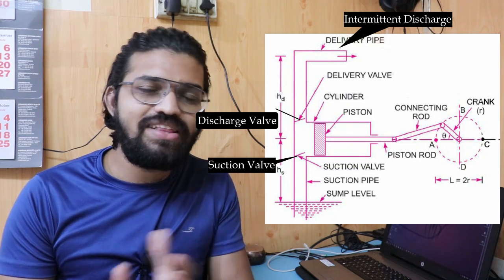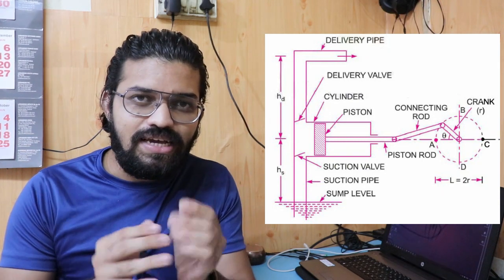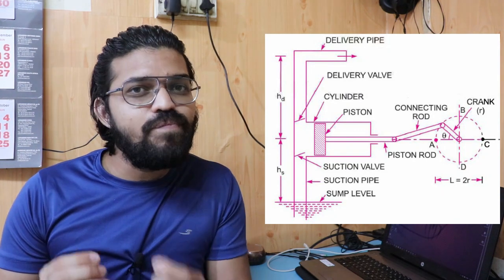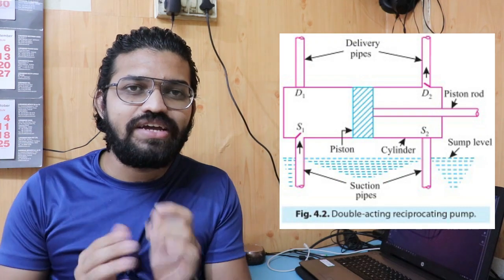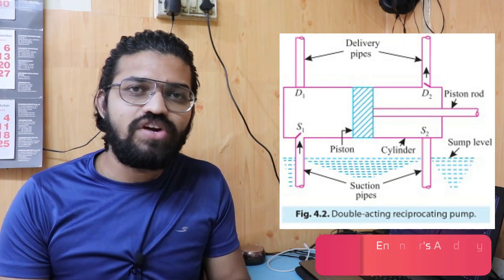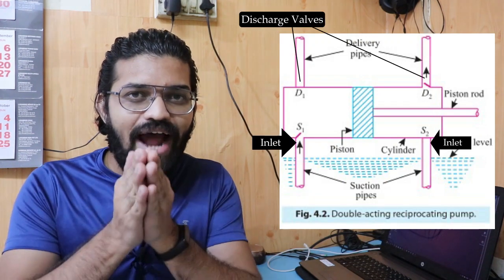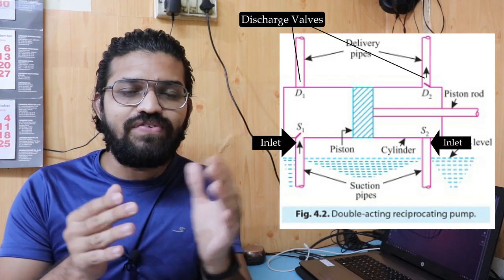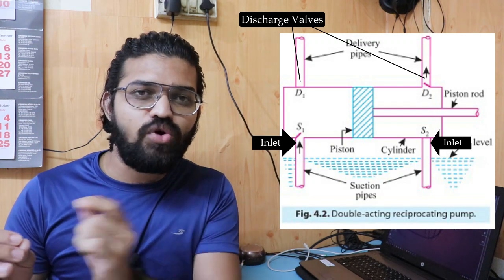To overcome the intermittent flow problem and improve the discharge, the cylinder-piston is slightly modified. Two inlet valves and two discharge valves are introduced in the double acting reciprocating pump. Here you can see the representation — two suction valves and two discharge valves are implemented, with the piston fitted at the center. The piston reciprocates between these two sides and the rotary motion of the crank is converted into reciprocating motion.